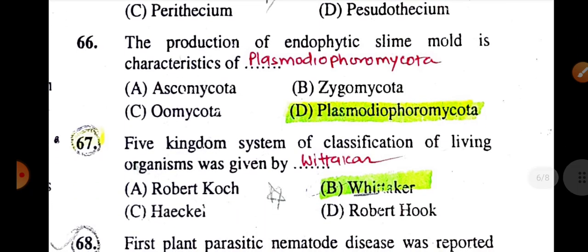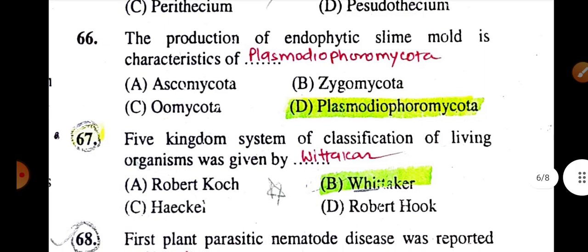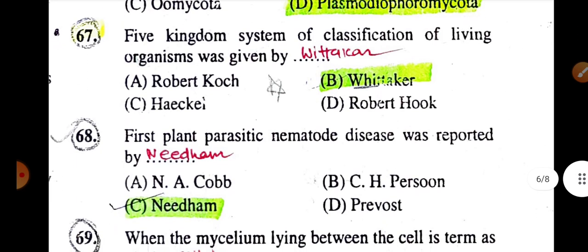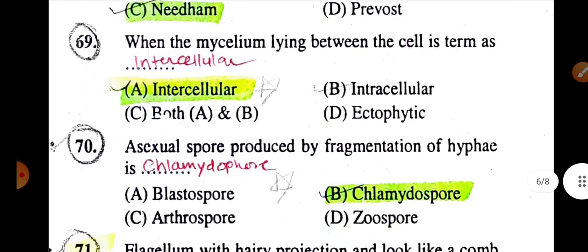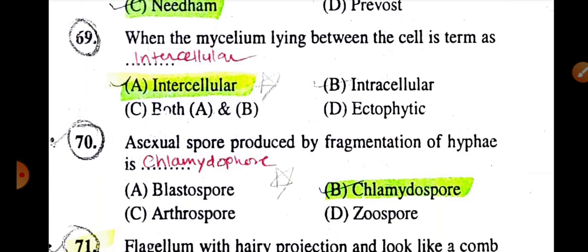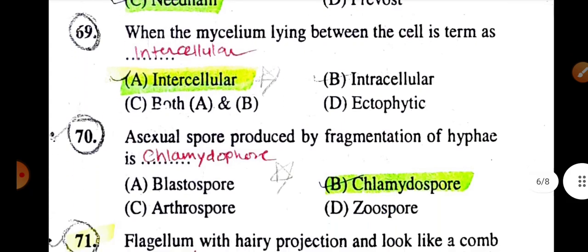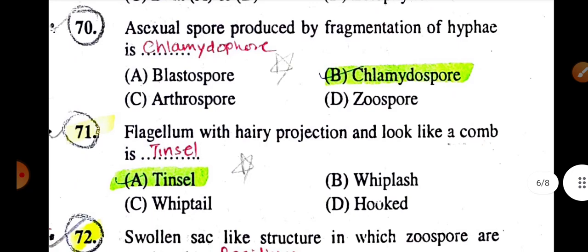Asci produced in a completely closed structure of fungi is known as cleistothecium. The production of endophytic slime mold is the characteristic of Plasmodiophoromycota. The five kingdom system of classification of living organisms was given by Whittaker. The first plant parasitic nematode disease was reported by Needham. When mycelium lying between cells is termed as intercellular. Asexual spore produced by fragmentation of hyphae is chlamydospore.